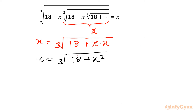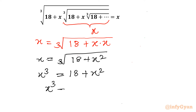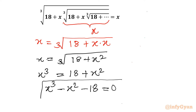Take cube of both sides. So x cubed equals 18 plus x squared. Taking all terms to one side gives us x cubed minus x squared minus 18 equals 0. This is our cubic equation.